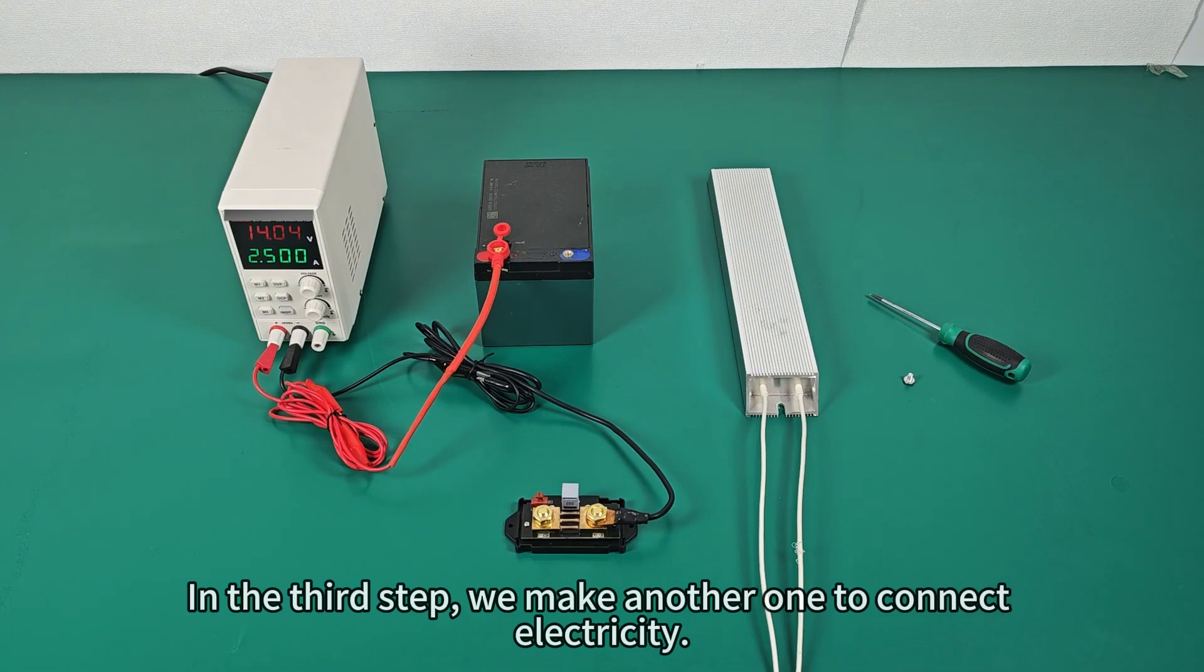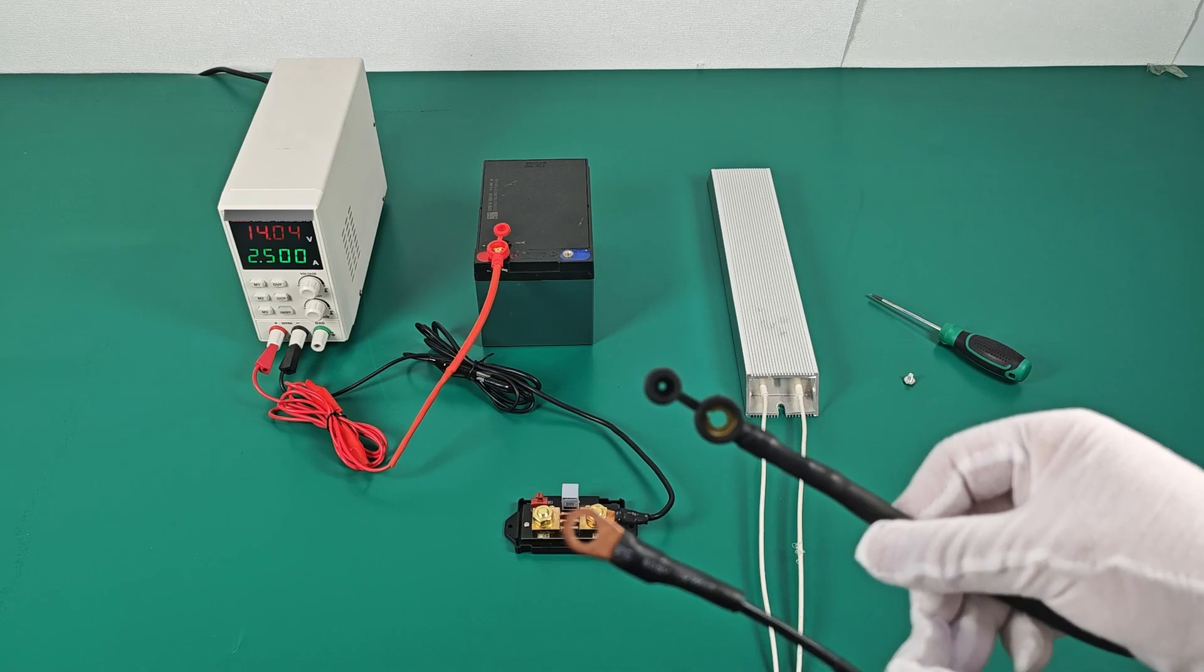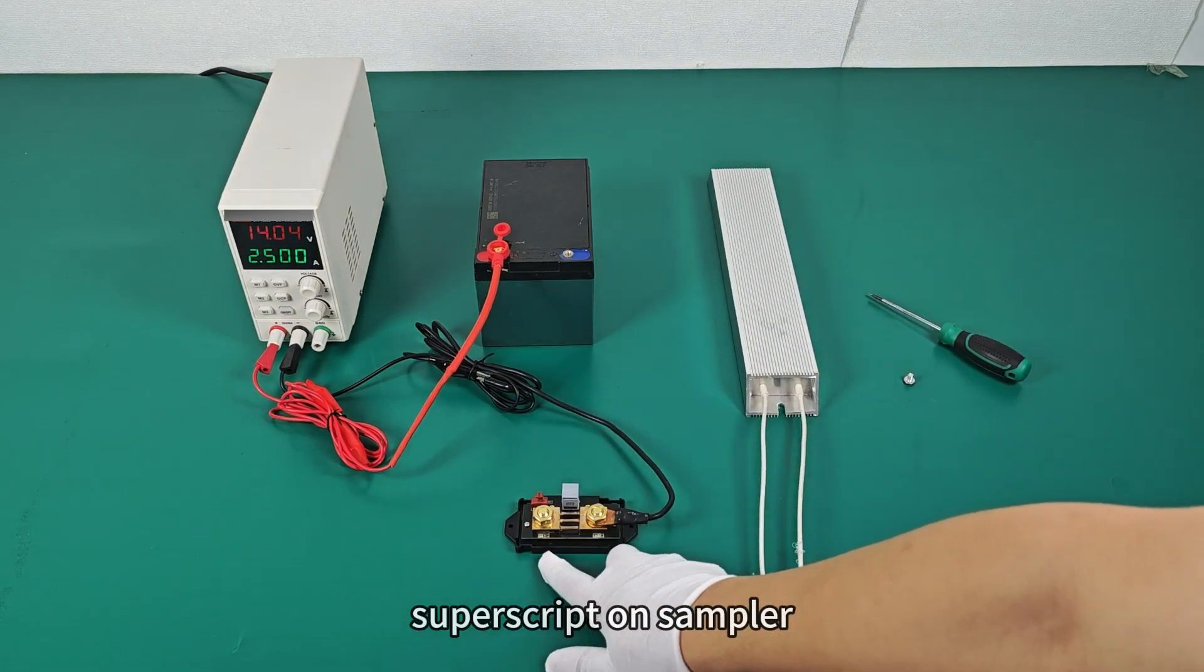In the third step, we make another one to connect electricity. Super script on sampler.